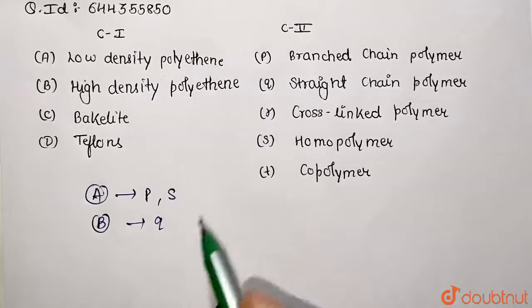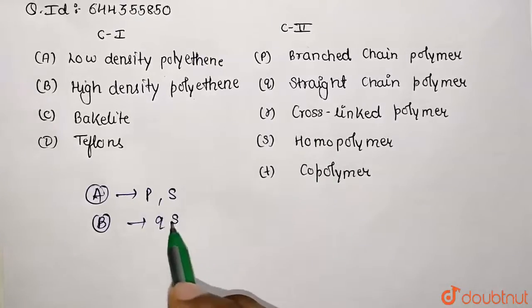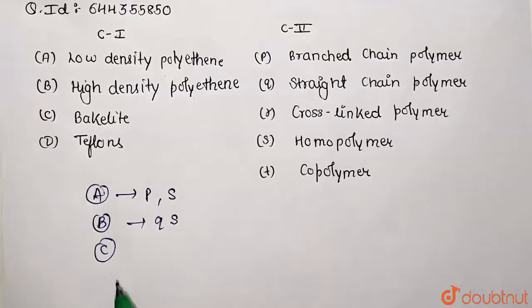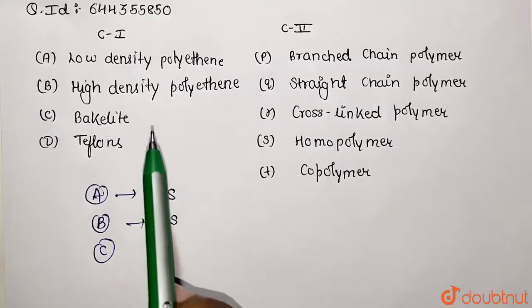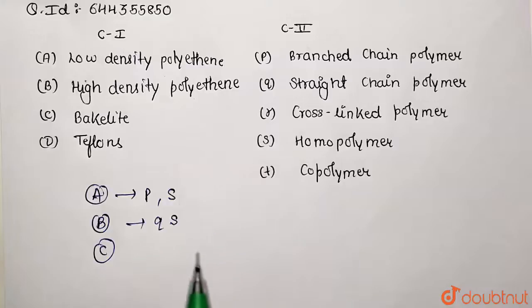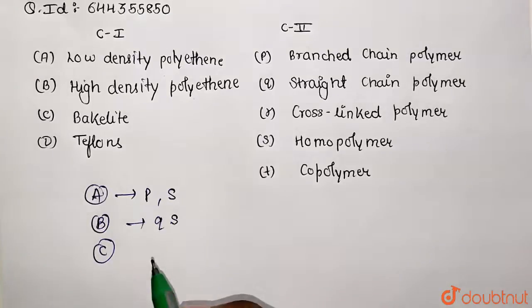Let's go with option C, Bakelite. We know that it's a cross-linked polymer manufactured from the monomeric units of phenol and formaldehyde. So these are the two sets which are going to mark towards the answer.